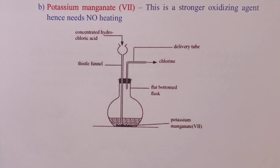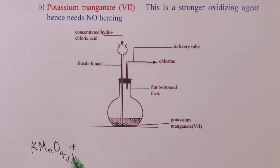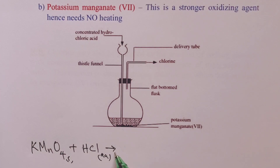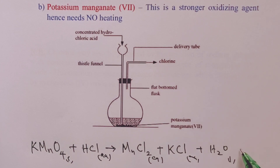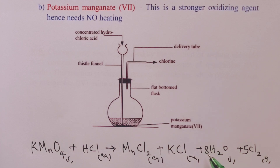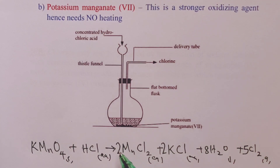For the equation, potassium permanganate (solid) reacts with hydrochloric acid (aqueous). The products are manganese(II) chloride (aqueous), potassium chloride (aqueous), water, and chlorine gas. For balancing: five on chlorine, eight on water, two on potassium chloride, two on manganese chloride, sixteen on hydrochloric acid, and two on potassium permanganate.